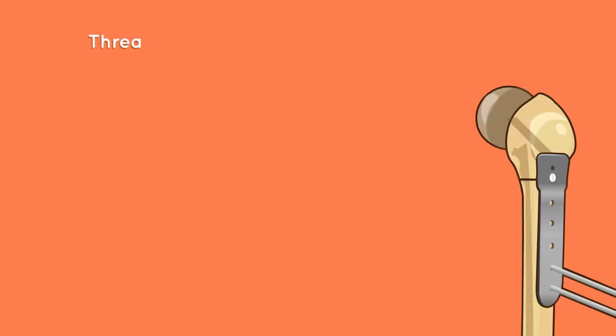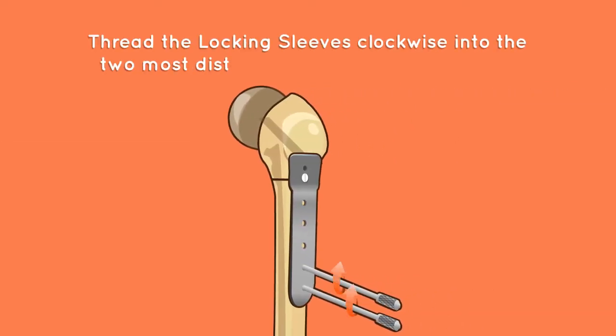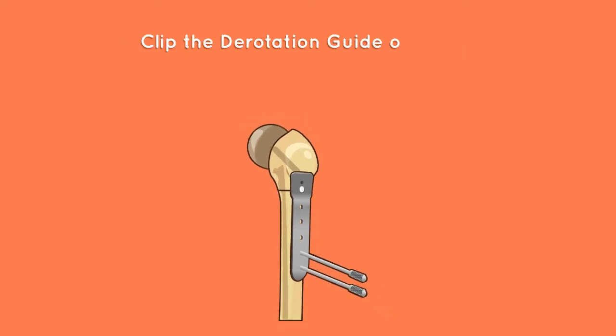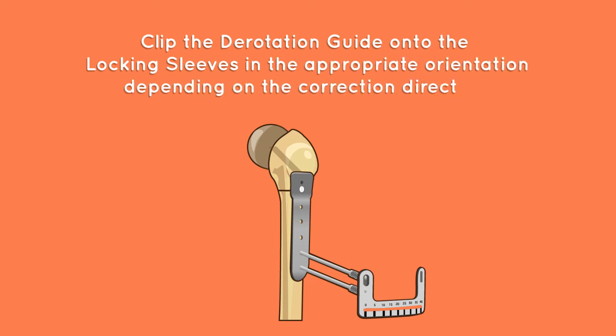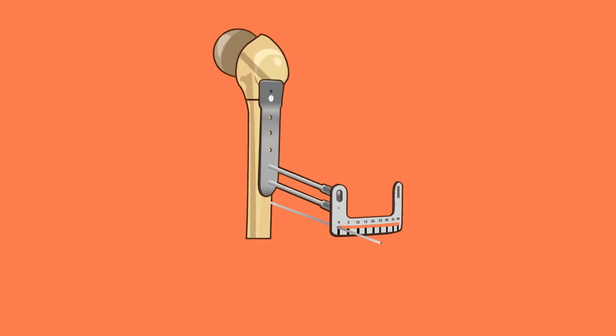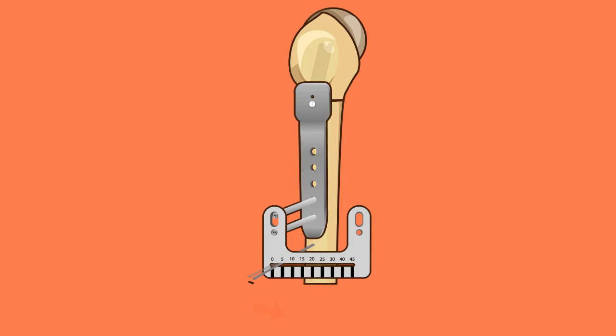Step 11: derotation, optional. Thread the locking sleeves clockwise into the two most distal adjacent holes of the plate. Clip the derotation guide onto the locking sleeves in the appropriate orientation depending on the correction direction. Insert the provided 2.8 millimeter derotation pin into the bone at the zero position on the derotation guide. Release the Verbrugge clamp and rotate the distal shaft to the desired correction angle. Reclamp the Verbrugge clamp once desired rotation is achieved.